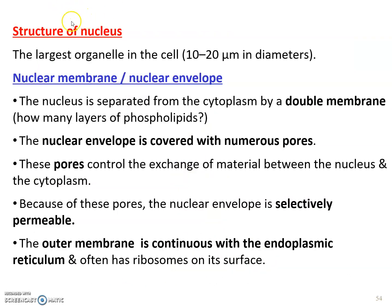The nucleus is the largest organelle in the cell, around 10 to 20 micrometers in diameter. It consists of double layers of nuclear membrane, or nuclear envelope. The nuclear envelope is covered by many pores, which function to control the exchange of genetic materials between the nucleus and the cytoplasm. Because of these pores, the nuclear envelope is selectively permeable. The outer layer of membrane is continuous with the endoplasmic reticulum.